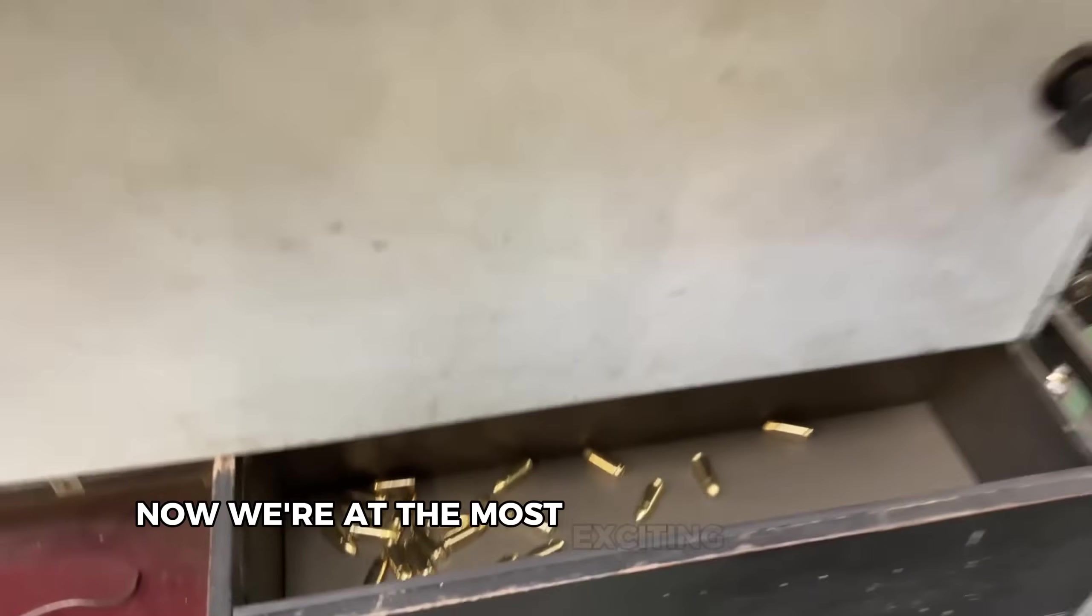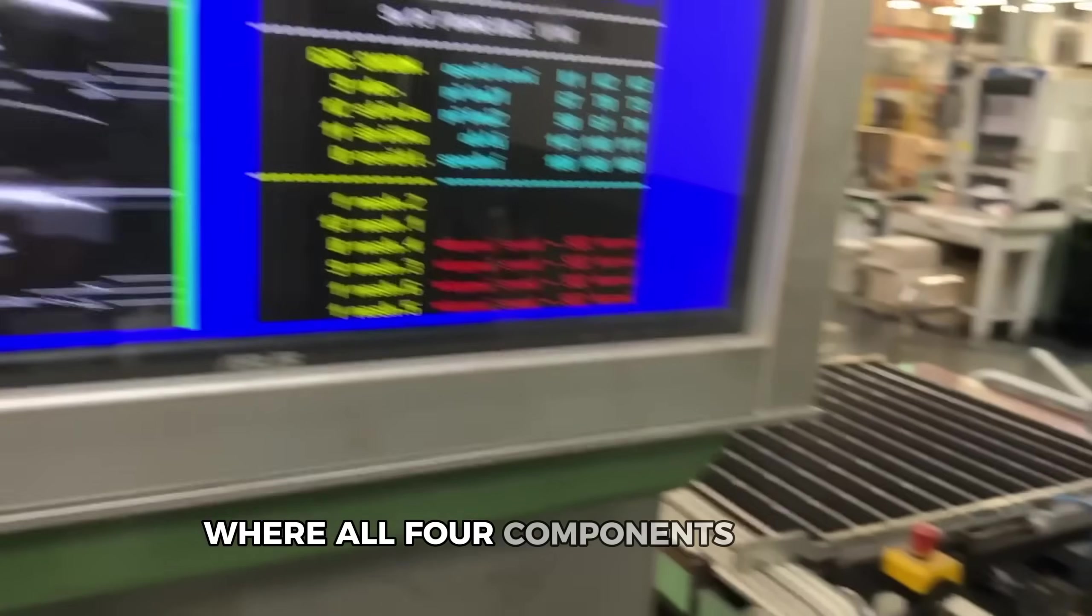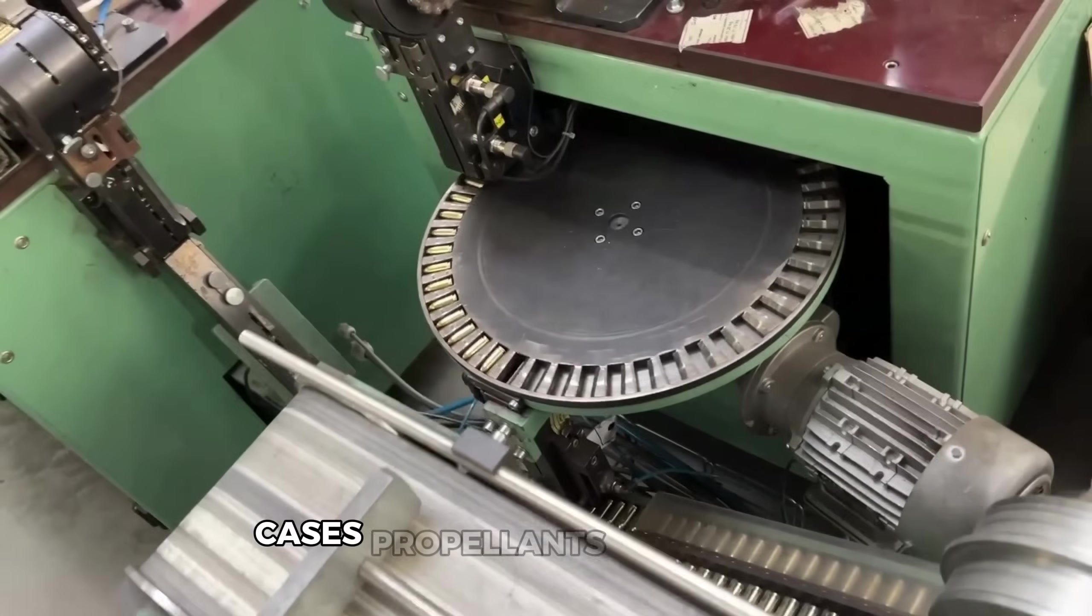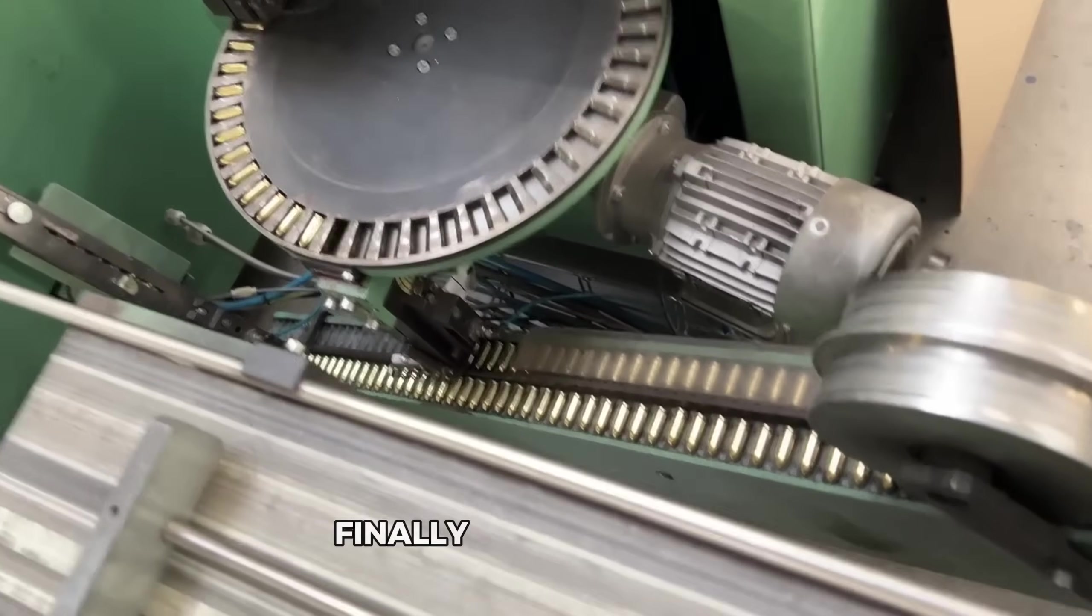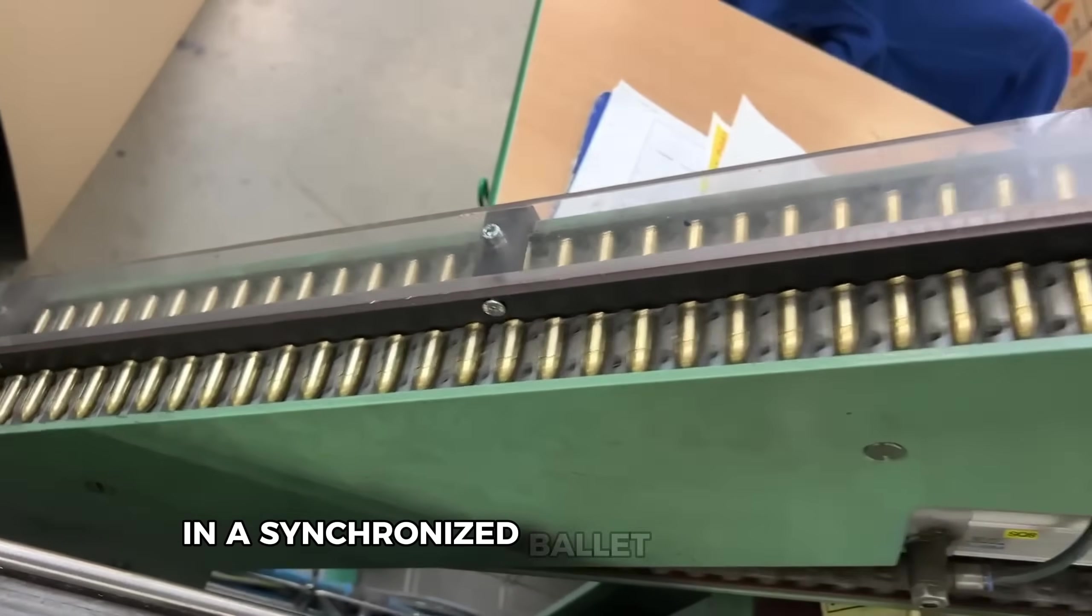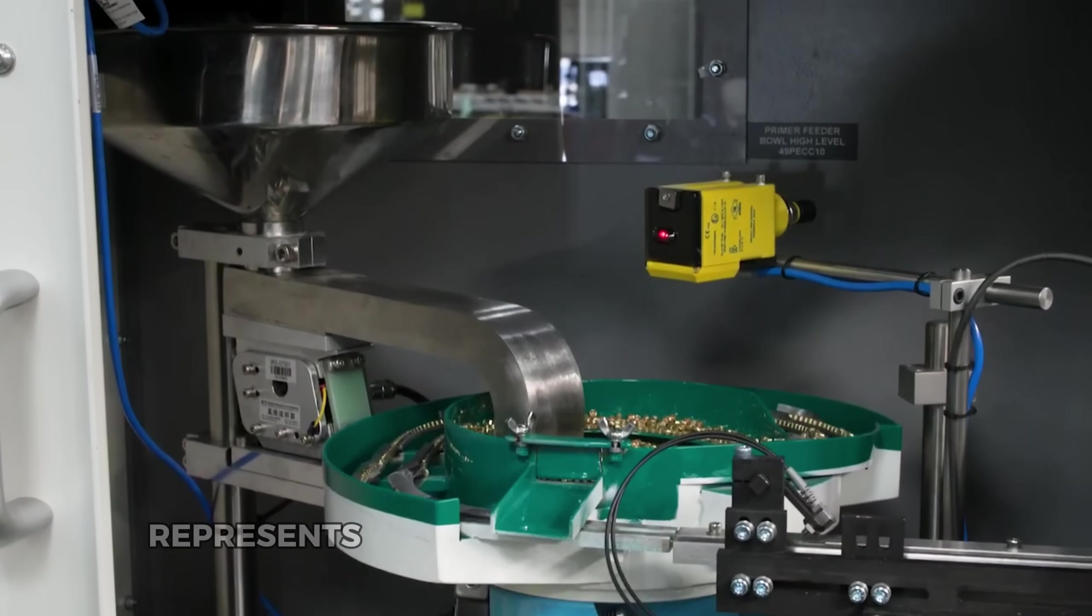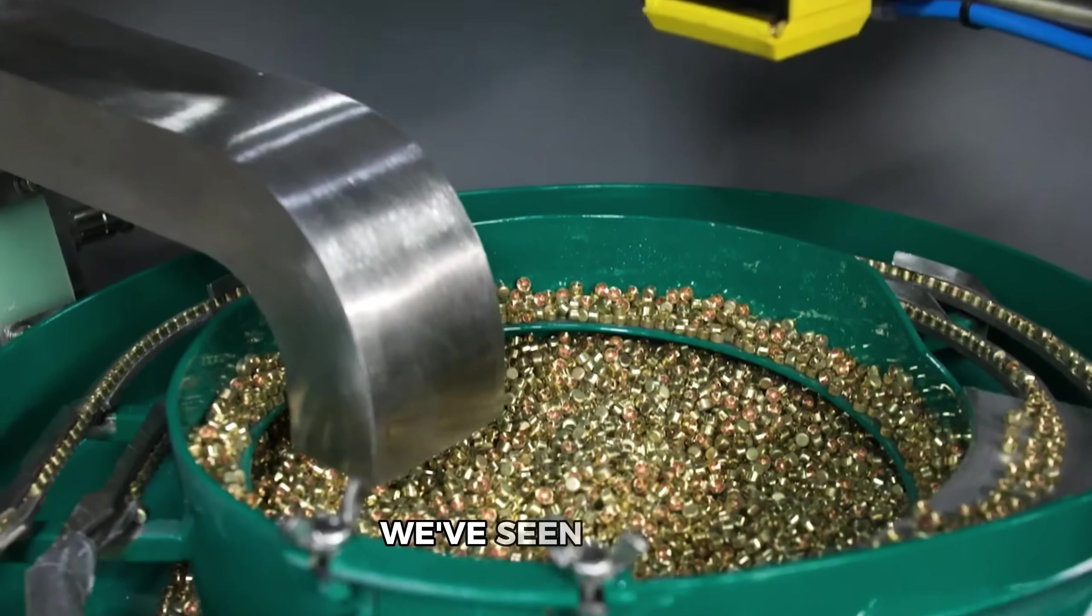Now we're at the most exciting part of the factory where all four components—primers, cases, propellants, and bullets—finally come together in a synchronized ballet of machinery. This assembly line represents the culmination of everything we've seen so far, with timing so precise it would make a Swiss watchmaker jealous.